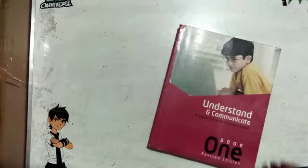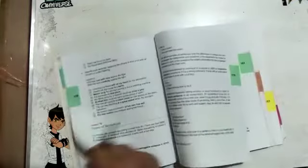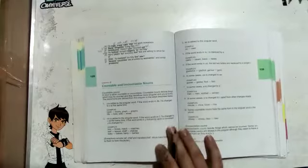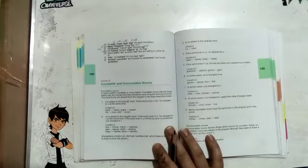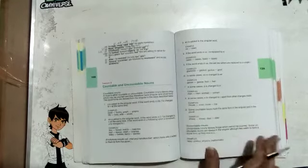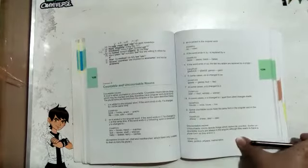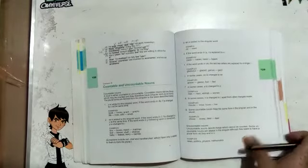So I'm going to open this book on page number 128. On page 128 I have a grammar chapter. Here on page 128 I have a grammar chapter which is countable and uncountable nouns, but before moving towards the back exercises of this chapter, let me tell you about what is countable and uncountable noun.